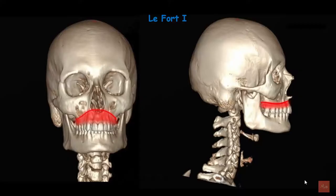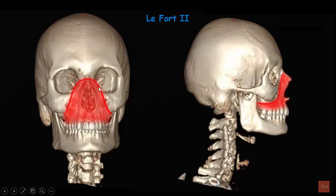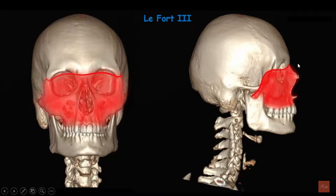These are the frontal and lateral images of the LeFort 1 fracture. LeFort 1 fracture is a horizontal transverse fracture that involves the anterior maxilla. LeFort 2 fracture is a pyramidal fracture involving the orbital rims. LeFort 3 is a complex facial fracture that separates the mid face from the cranium.